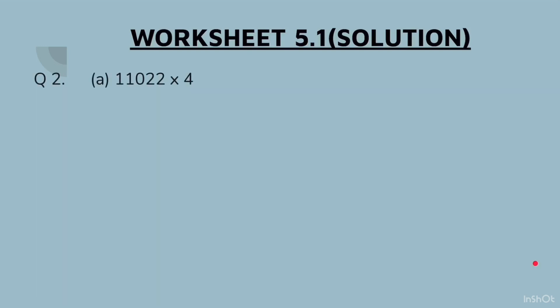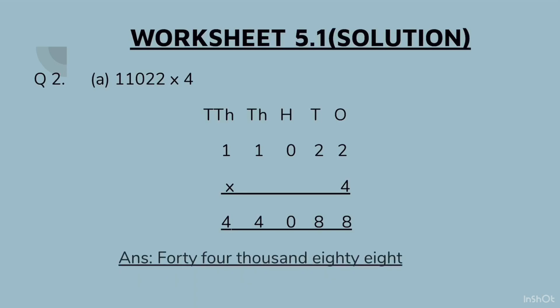Question 2 (a) part: 11022 × 4. When you multiply this, you get the answer as 44,088. We had to also write this answer in words, so we will write answer 44,088.